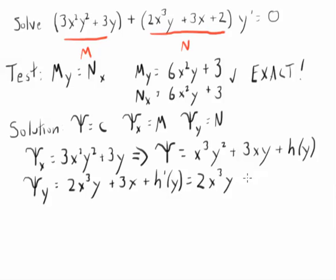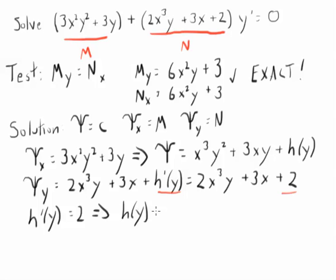And you'll notice as I write things down, we've already got a really good match. In fact, everything matches up, except I need that equal to that. Well, that's pretty easy to make happen. If h prime of y equals 2, that just means that h of y is 2y.